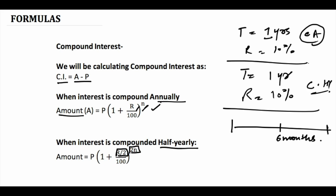If I have invested 1000 at the rate of 10 percent compounded half yearly for one year, then for the first six months I will get 5 percent rate of interest, which will be 50 rupees. After six months I will again get 5 percent rate of interest, but this 5 percent will not be on 1000 — it will be on 1050, that is 1000 plus 50. So my money is getting compounded every six months.